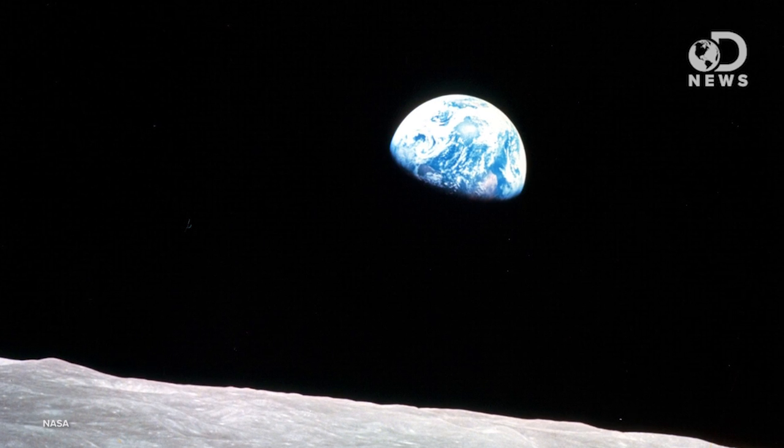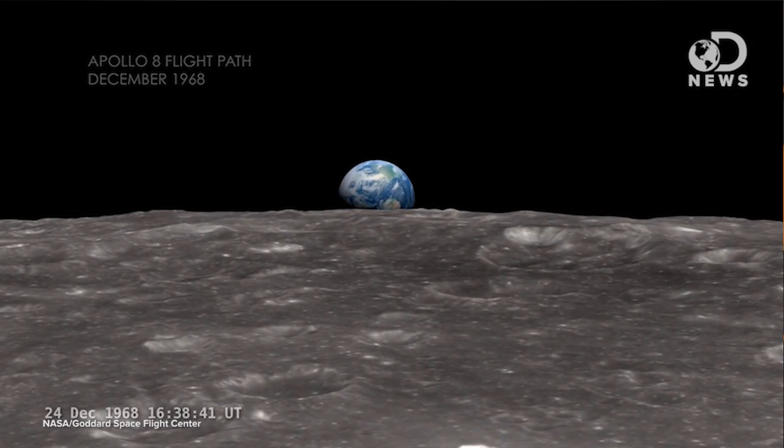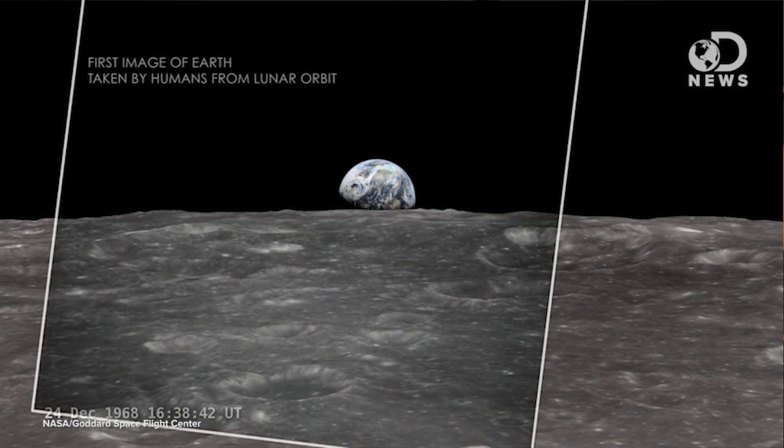Christmas celebrations vary across the world down here on Earth. The Russians, for example, put more emphasis on the New Year than they do Christmas. So up on the ISS, astronauts try and mix their celebrations, and the first Christmas in space was on Apollo 8. December 24th, 1968, they became the first humans to orbit the moon.